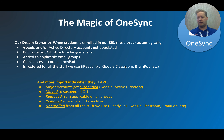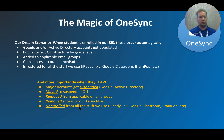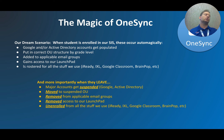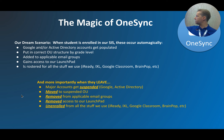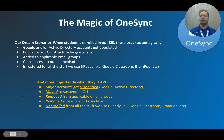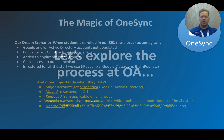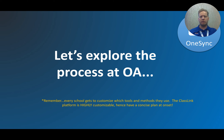Equally important — shown in yellow on that slide — is deprovisioning. As Data Protection Officer I need to make sure data isn't left active after someone leaves. When a kid graduates, transfers, or a teacher takes a job elsewhere, those orphaned accounts need to be handled — not just because auditors say so, but for data protection reasons. All the deprovisioning steps happen automatically when we simply uncheck the box to make them no longer active in our student information system.